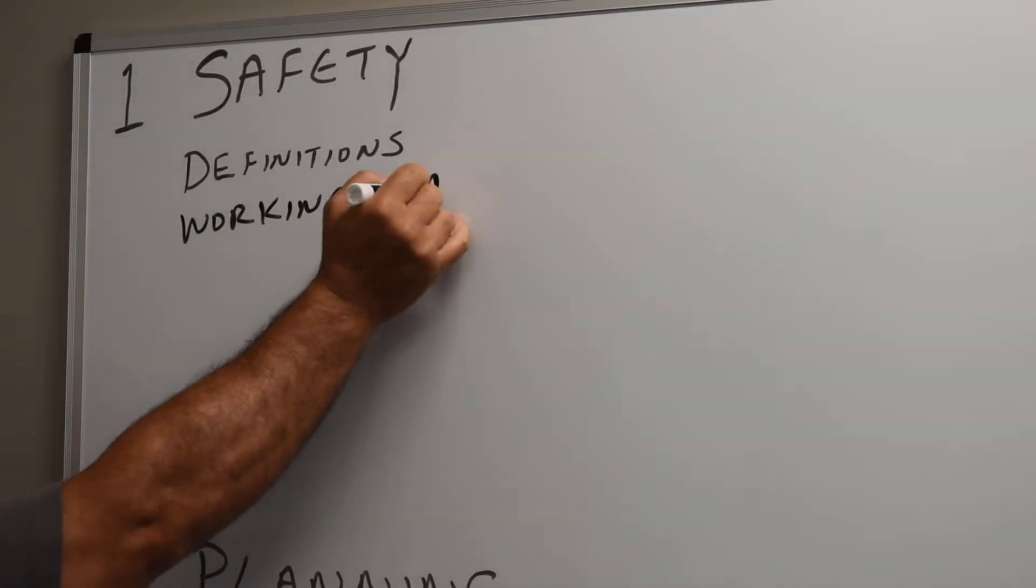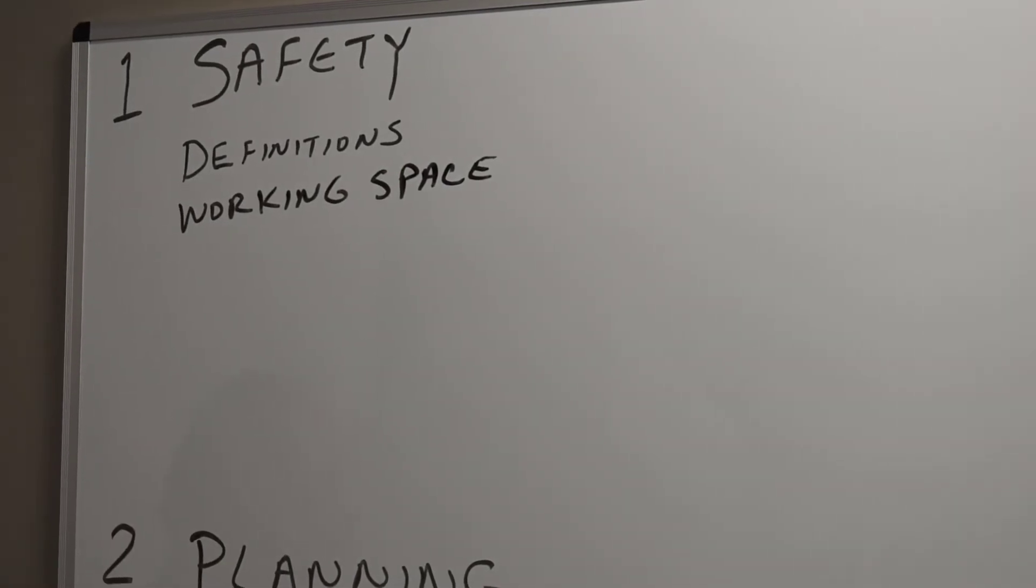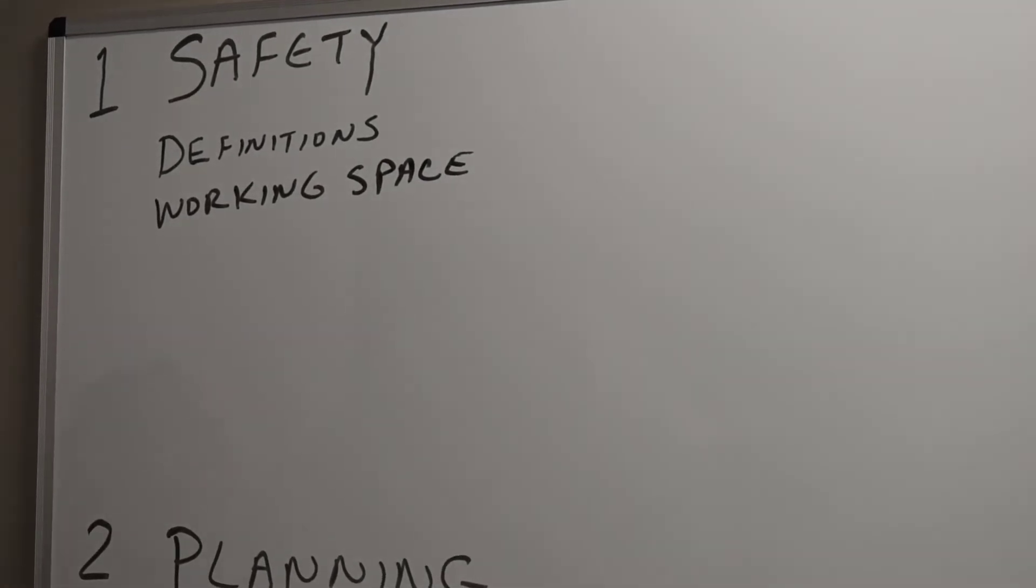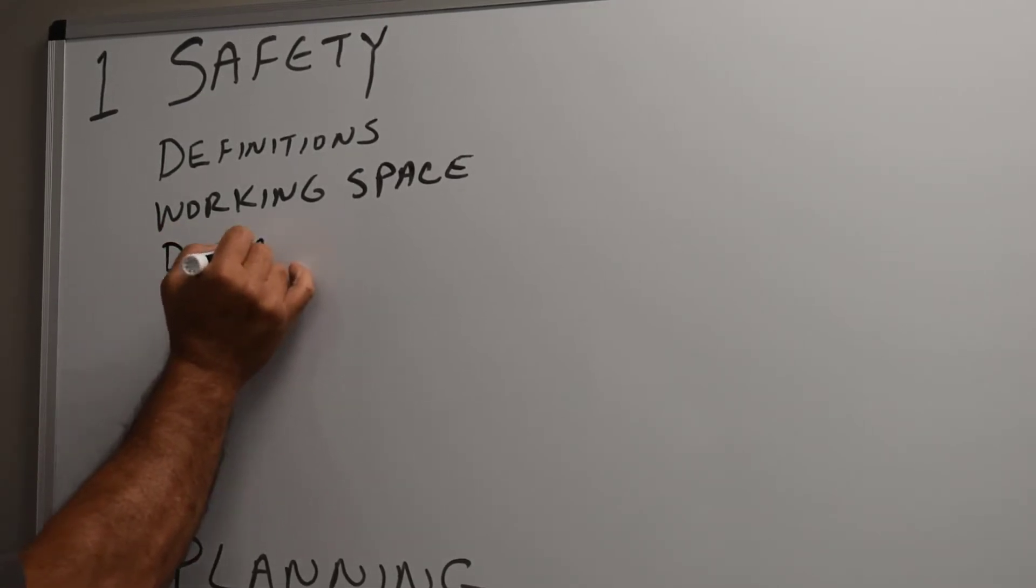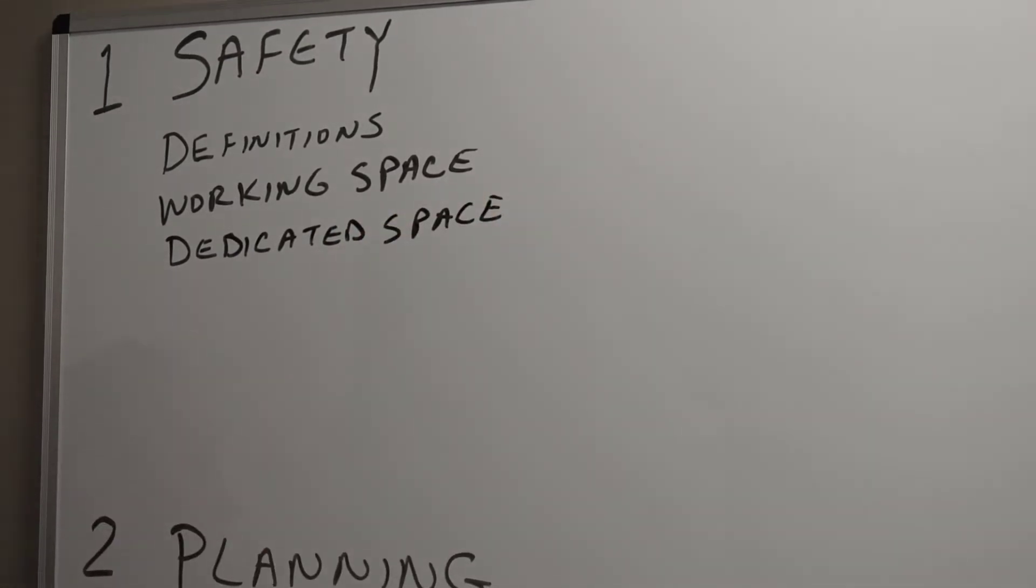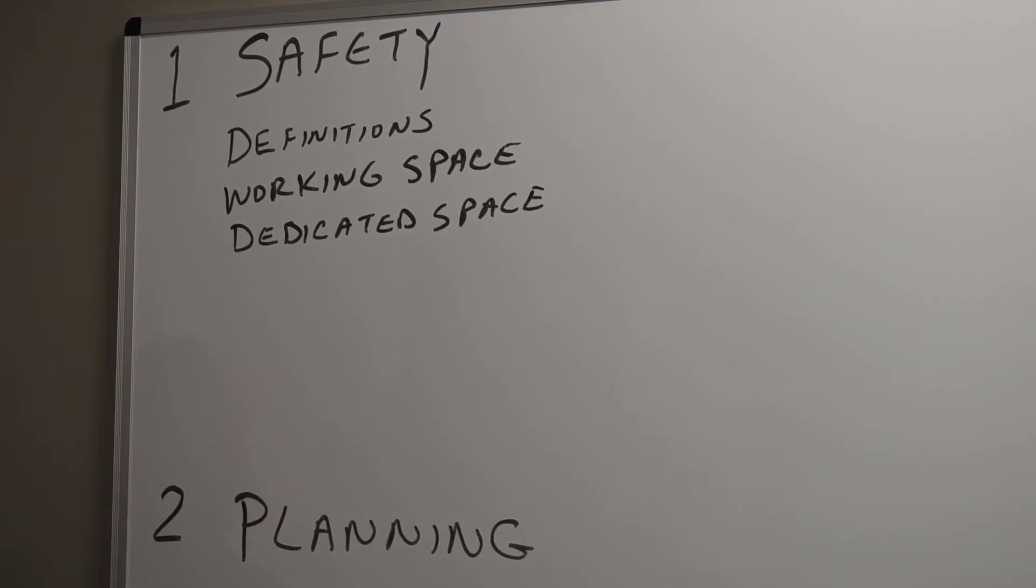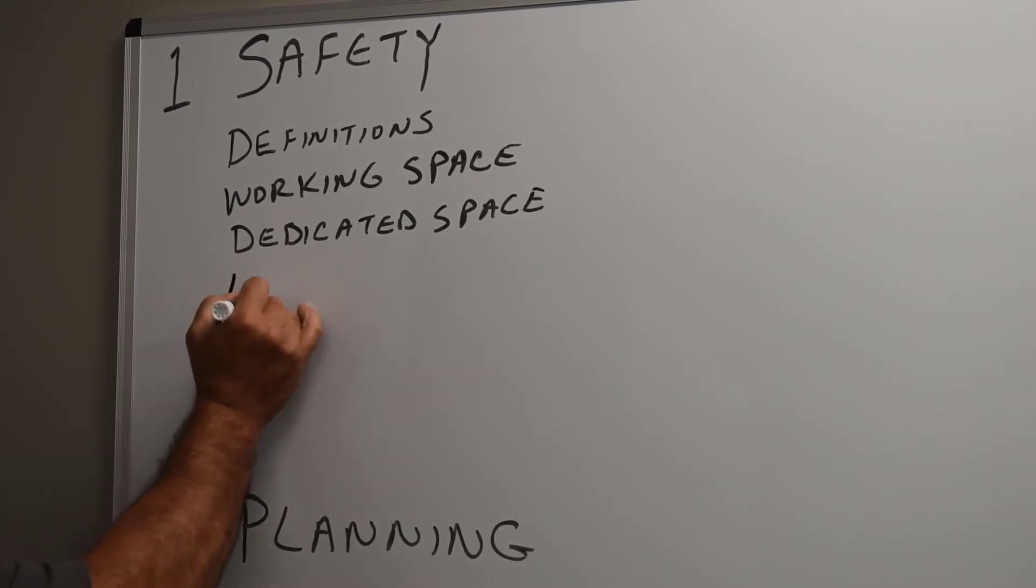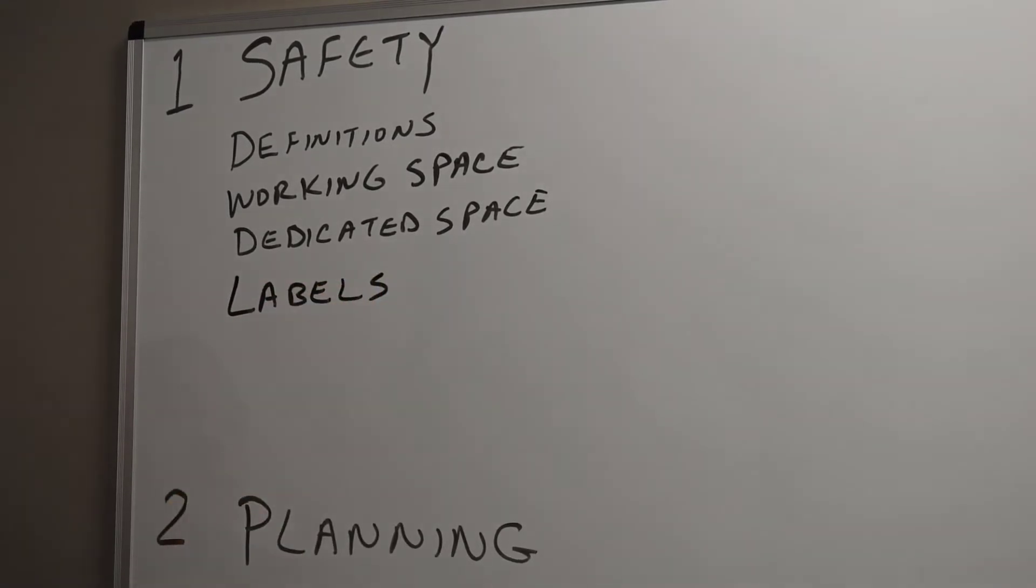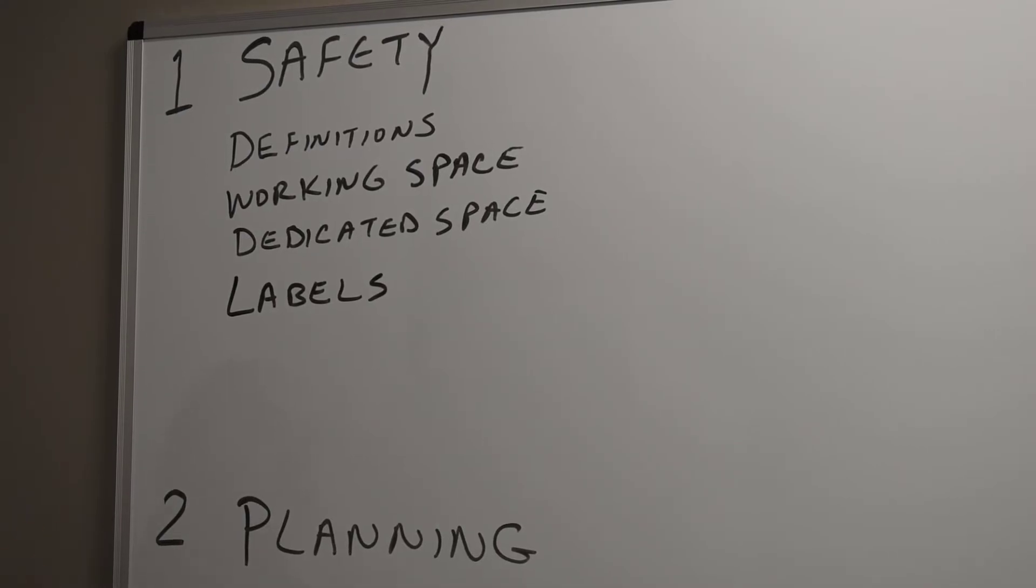Also in the Safety will be working space, working space about electrical equipment. If you don't have enough working space, you got problems. We've got dedicated space, that's the dedicated space for our electrical equipment to live in so we don't have other foreign stuff in it. There's many different pieces and parts, but there's a lot of stuff in the National Electric Code. It requires us to label, either field label or factory label, different things. So all the different labels that are required and how the format of those labels are, are in the Safety.